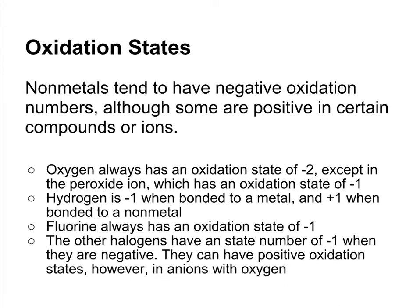Fluorine is always going to be minus one. The other halogens have an oxidation state of minus one when they're negative. They can have positive oxidation states if they're in ions combined with oxygen — oxygen would carry the negative oxidation state, and those other halogens could be positive.